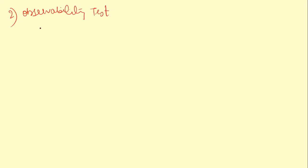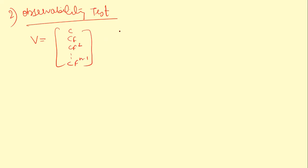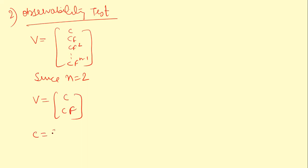For the observability test, we use the observability matrix V = [C; CF; CF²; ...; CF^(n-1)]. Since n = 2, V = [C; CF]. C is already given as [1, 1]. We need to compute CF by multiplying C with F = [-1, 1; 0, -1].